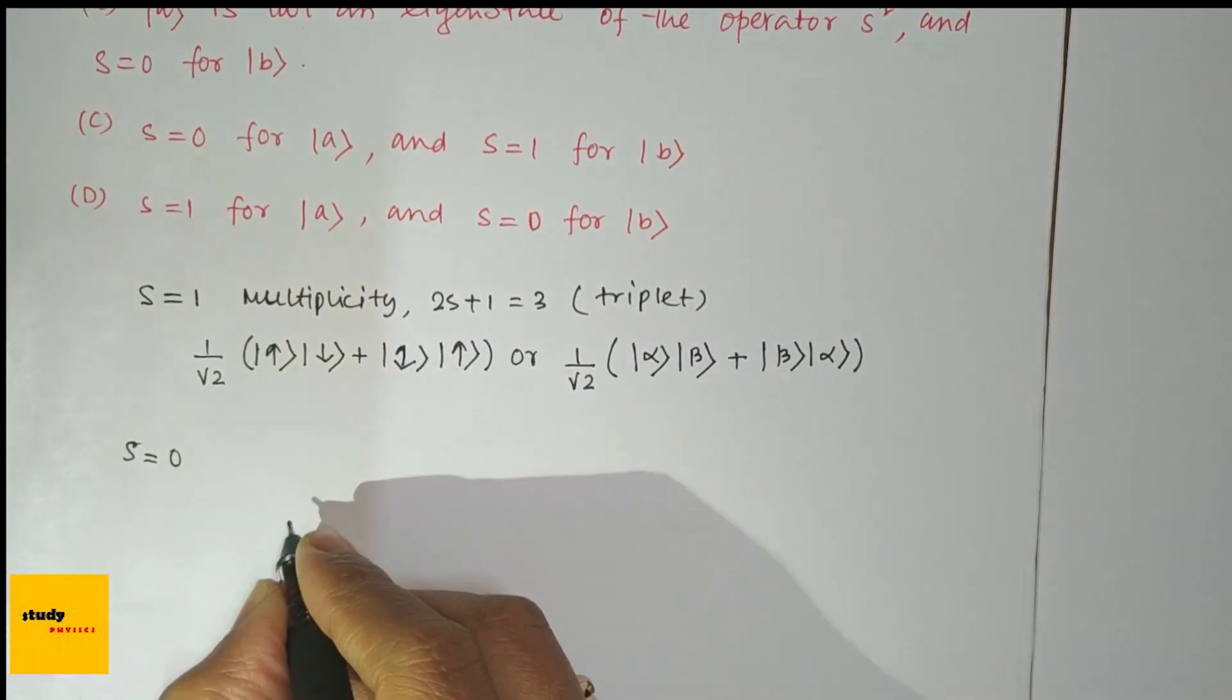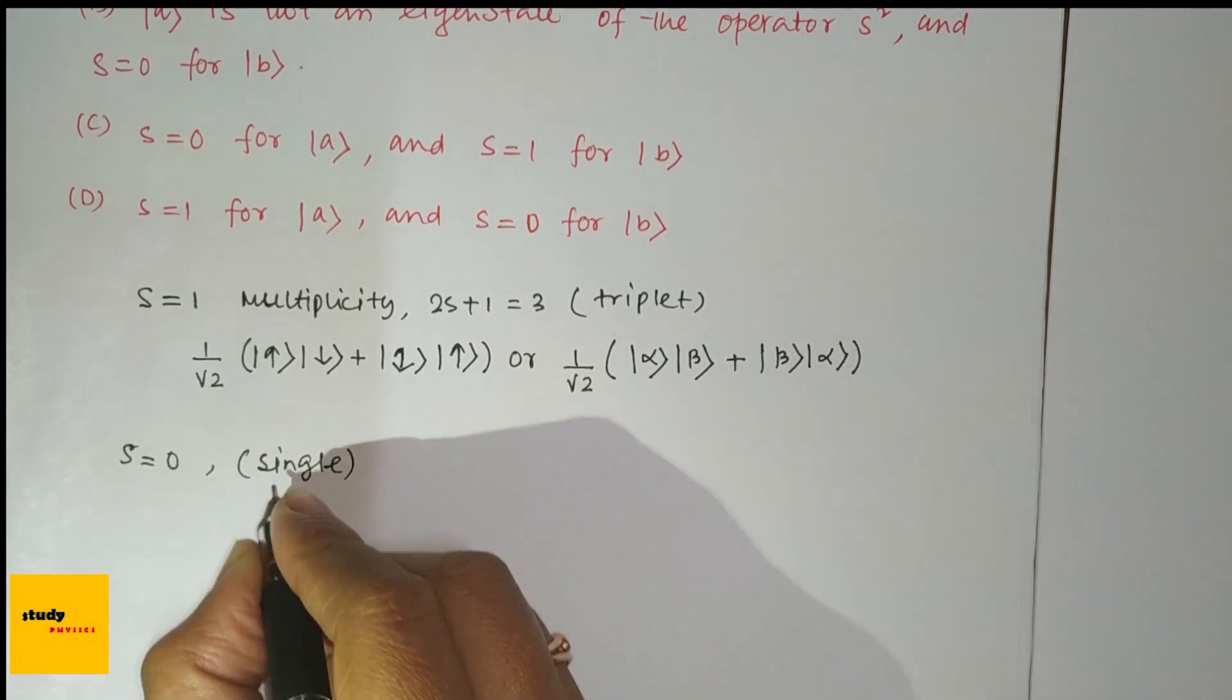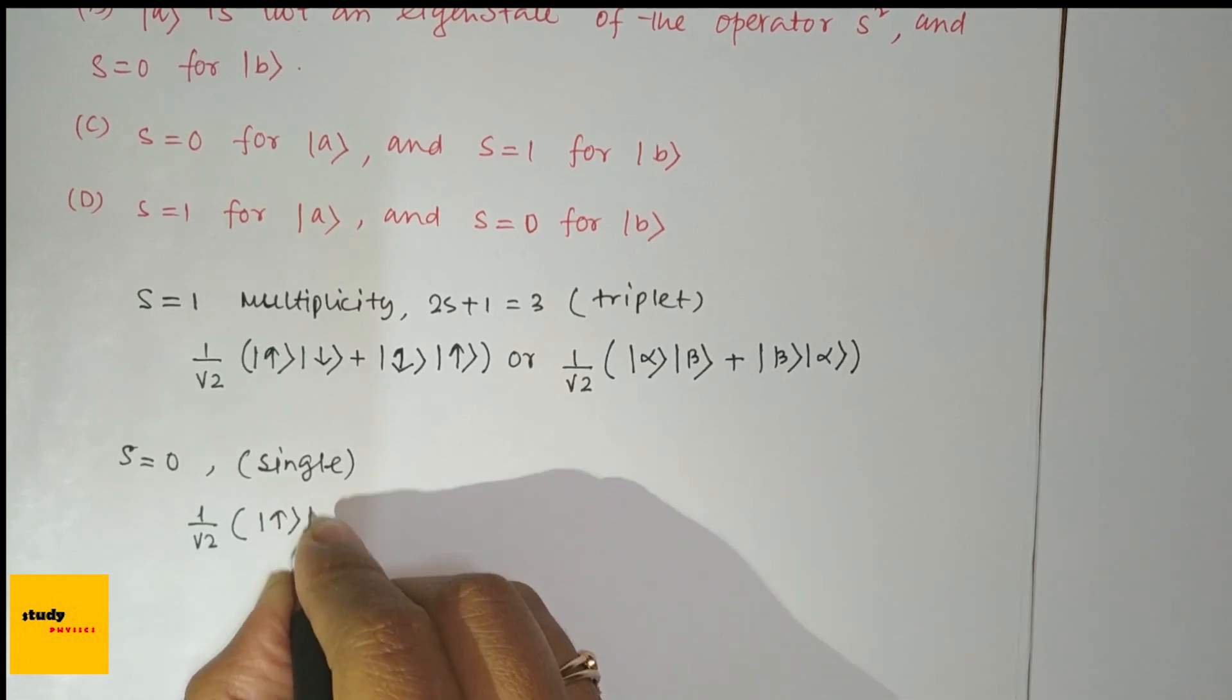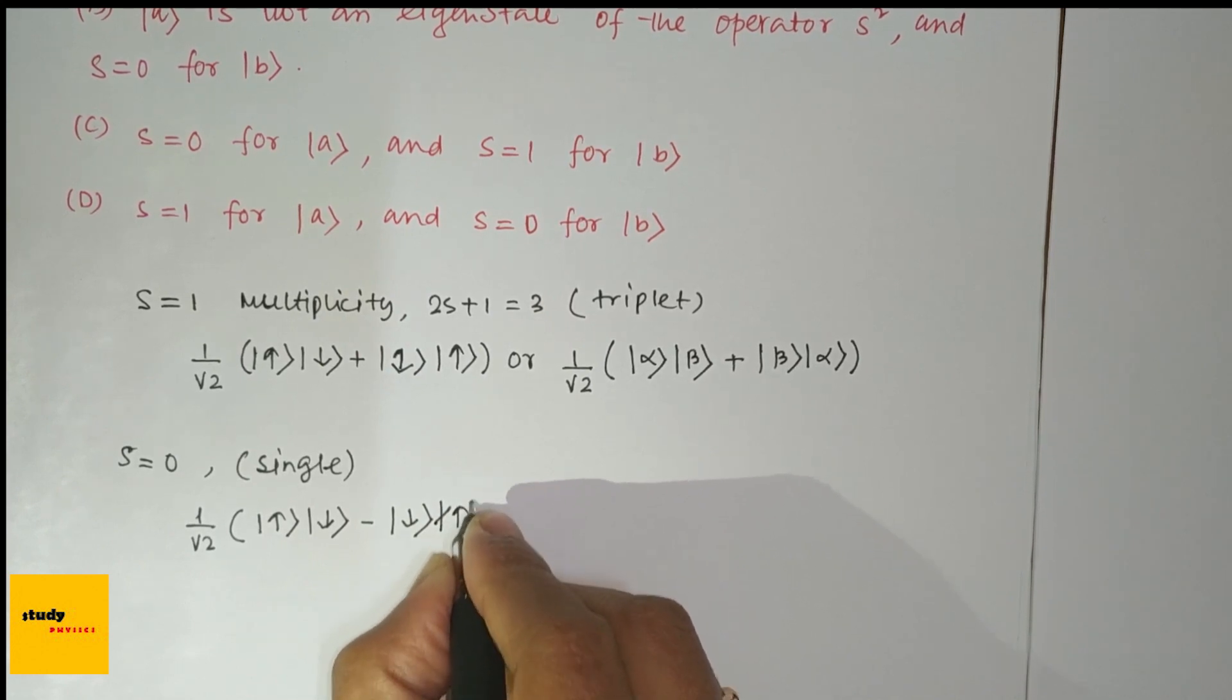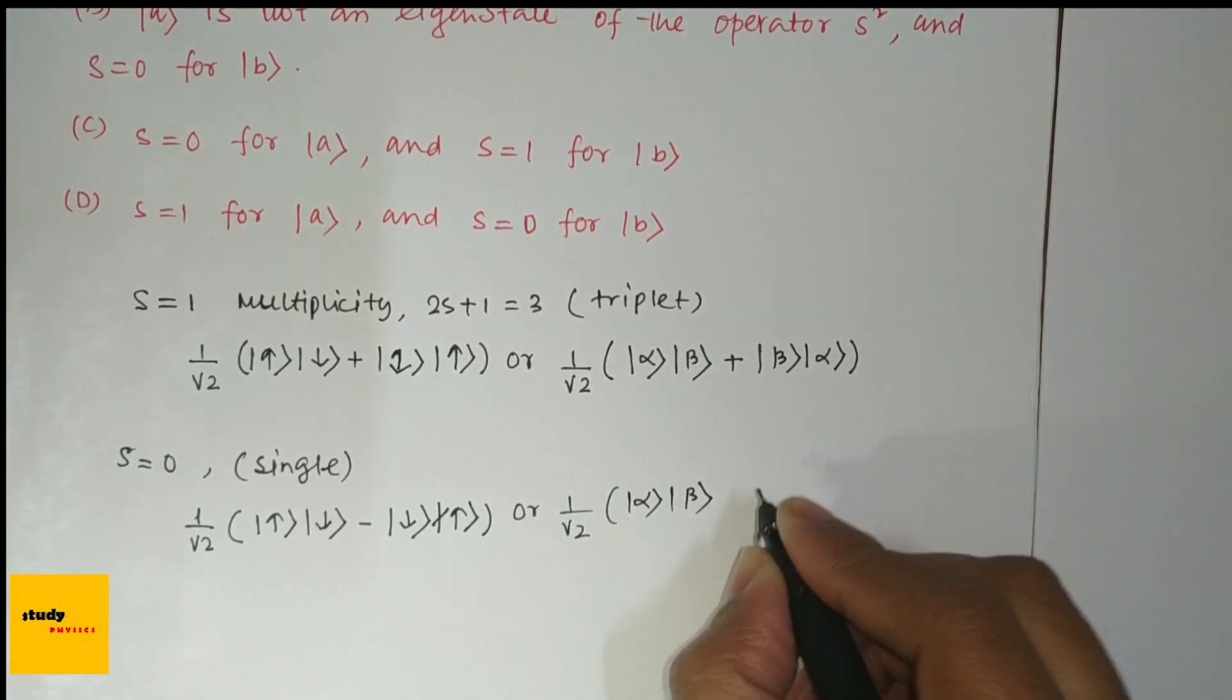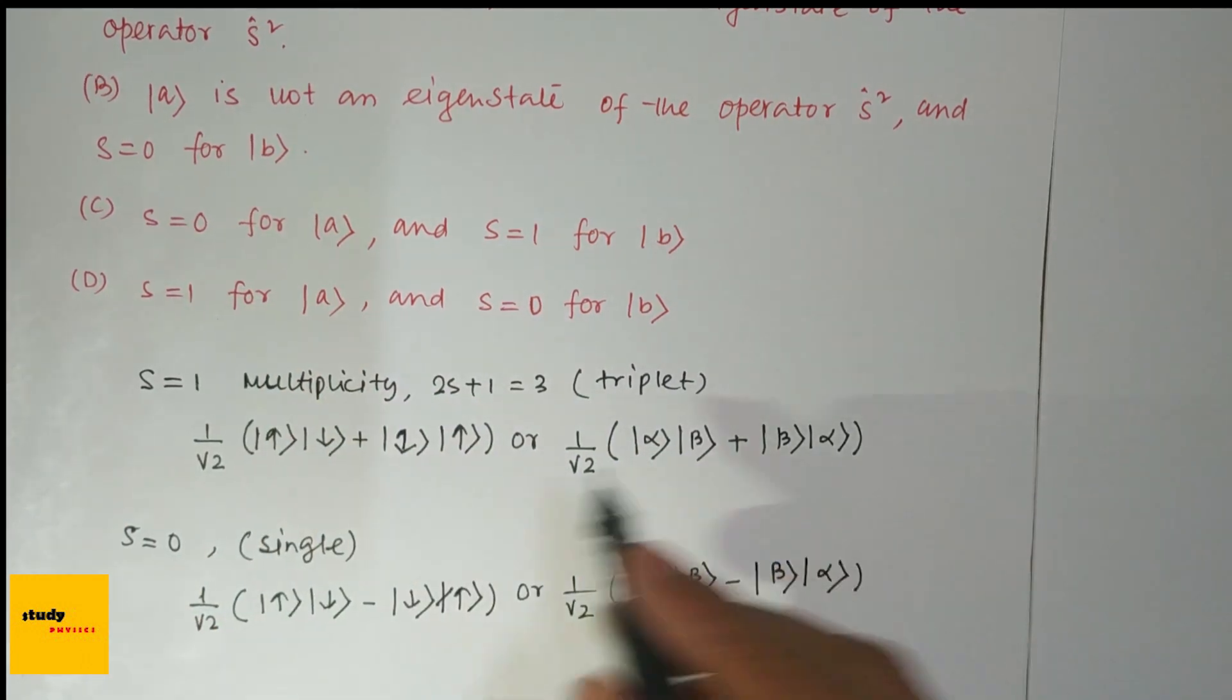When S=0, from multiplicity this is a singlet or single state. From this we can write 1/√2 (|↑↓⟩ - |↓↑⟩) or alpha beta minus beta alpha. So when S=1 this is...